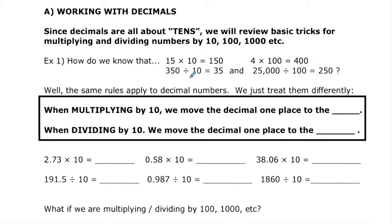When we're thinking about division, if we have a number that ends in a zero and we're dividing by a power of 10, we take off one zero for each zero we are dividing by. So 350 divided by 10 becomes 35, and 25,000 divided by 100 — we take off two zeros — and we're left with 250, and so on.